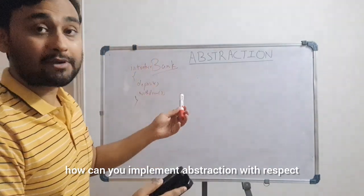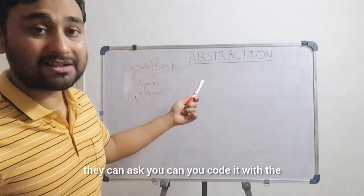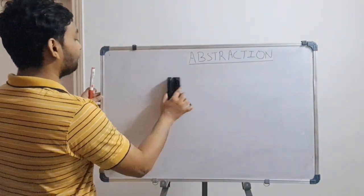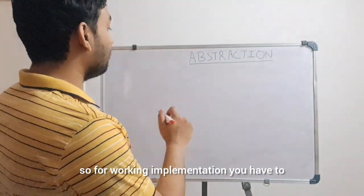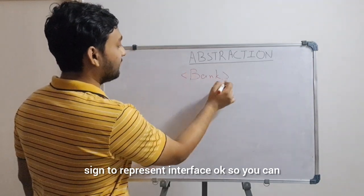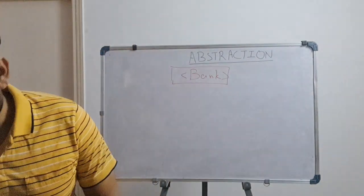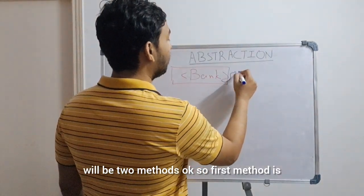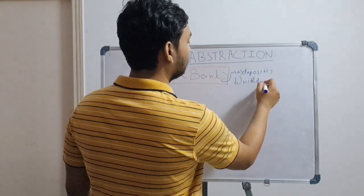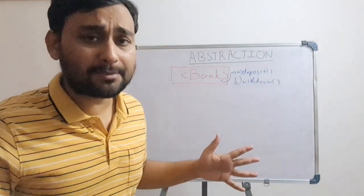Let's jump onto the code with a real-time bank example. You've given the theory to the interviewer, and now they can ask you to code it and explain how abstraction is working in Java. So for the implementation, you first create one bank interface. This is the sign to represent an interface — bank is the interface. Within that bank, there will be two methods: first is the deposit method, and second is the withdraw method. These two methods will be present in this bank interface. Within this bank there can be lots of different types of accounts.